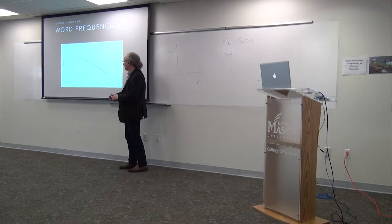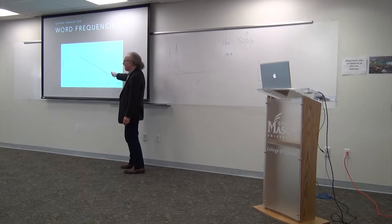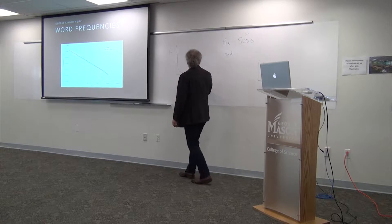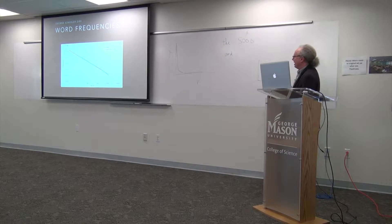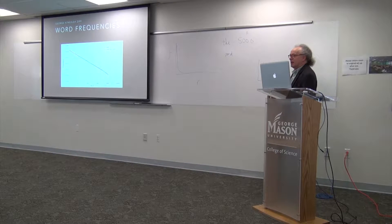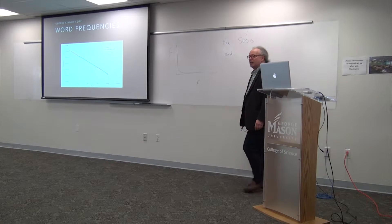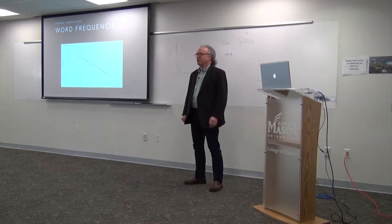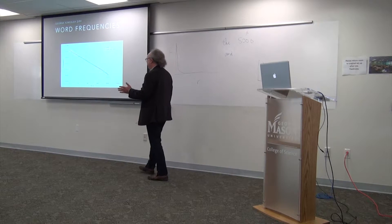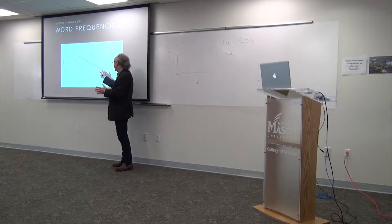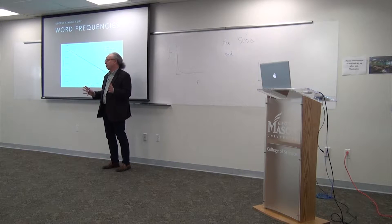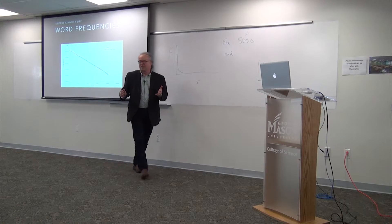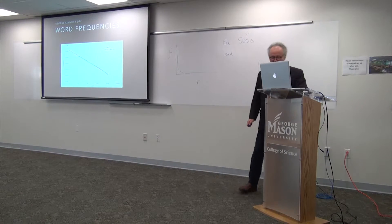What I'm going to talk about today is the why: why do we get this power law? Power law meaning that in log-log coordinates we get a straight line. And in particular, why do we get slope minus one? I'm going to assert that it's a mystery that has not been solved. You may have heard pet ideas about why it should be a power law, why it should be minus one — I'm going to argue today that all those things you believe are wrong.